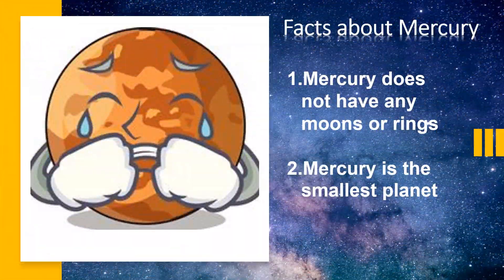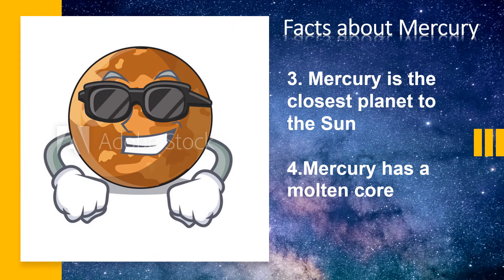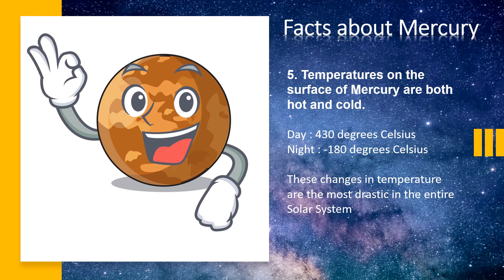Now some facts about Mercury: Mercury does not have any moons or rings. Mercury is the smallest planet. Planet Mercury is the closest planet to the sun. Mercury has a molten core.